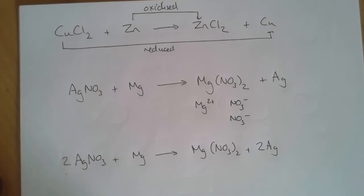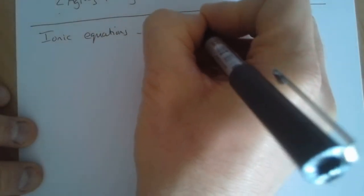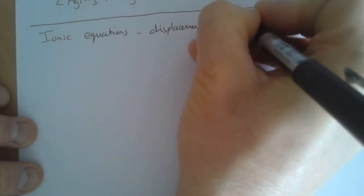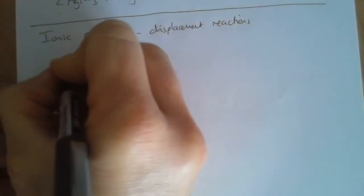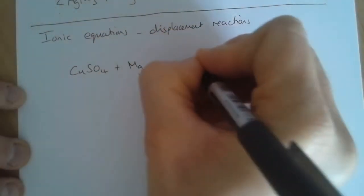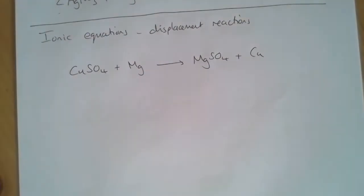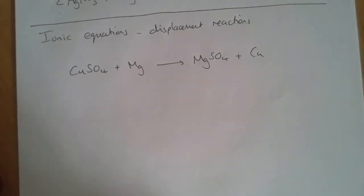The final thing we're going to look at is ionic equations, and this is very much higher tier. So if you're not doing higher tier, you can probably leave it at this point. We're going to have a look at ionic equations for displacement reactions. Let's go back to the reaction between copper sulfate and magnesium to give us magnesium sulfate and copper. We can see that the copper has been reduced and magnesium has been oxidized.